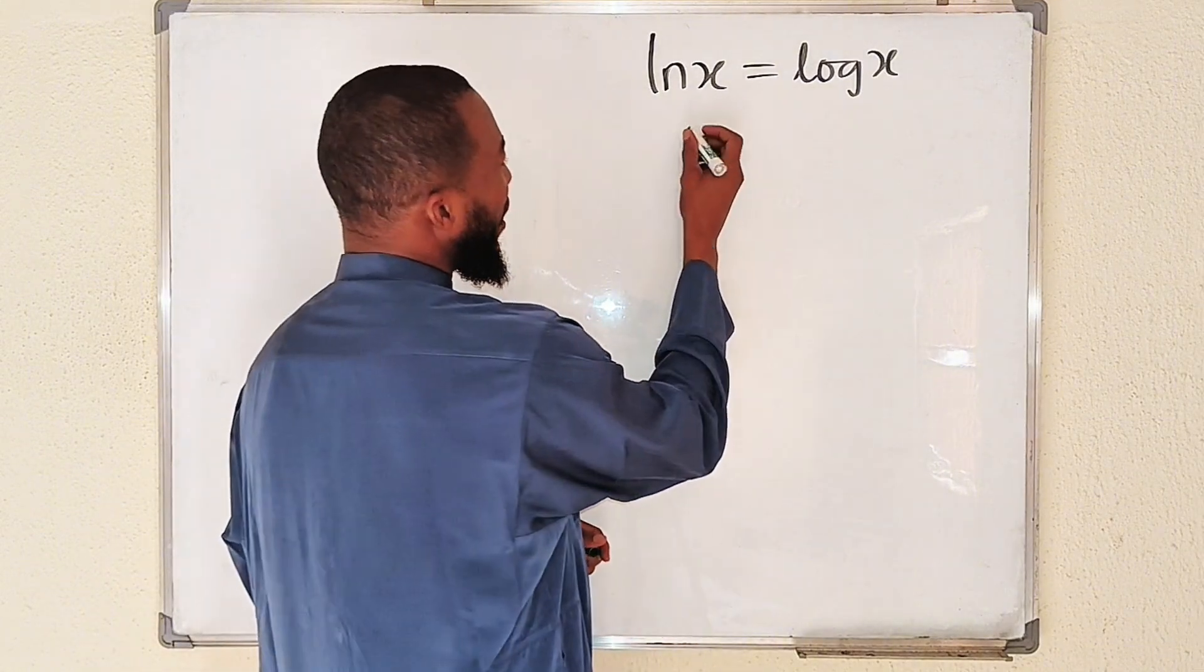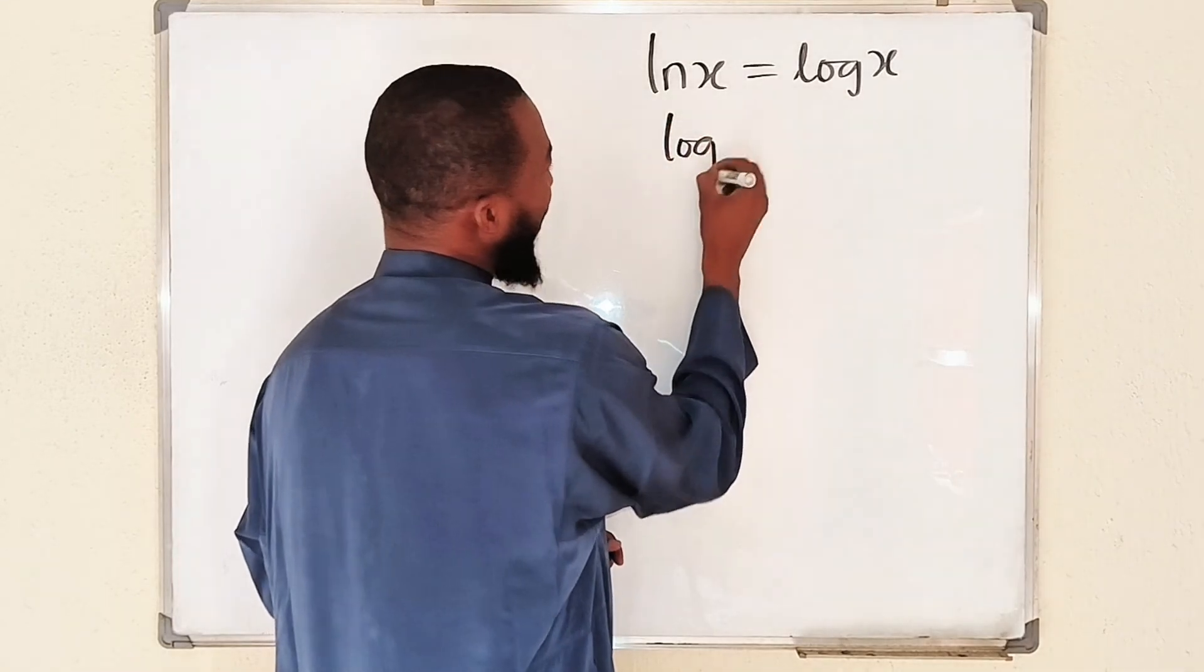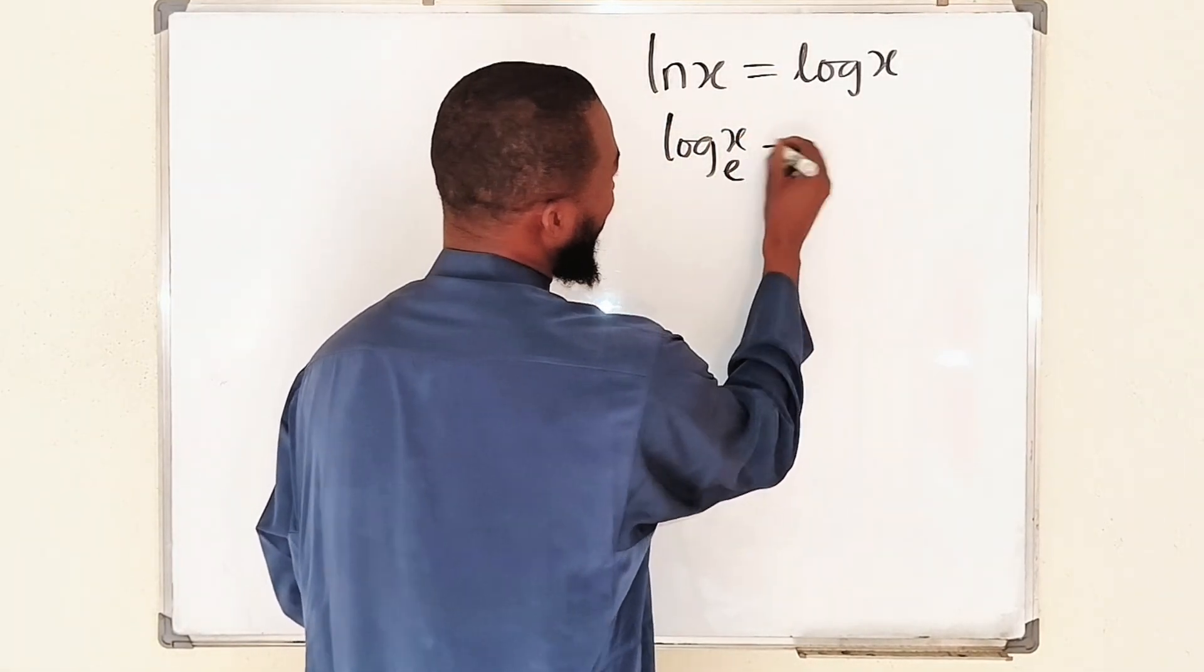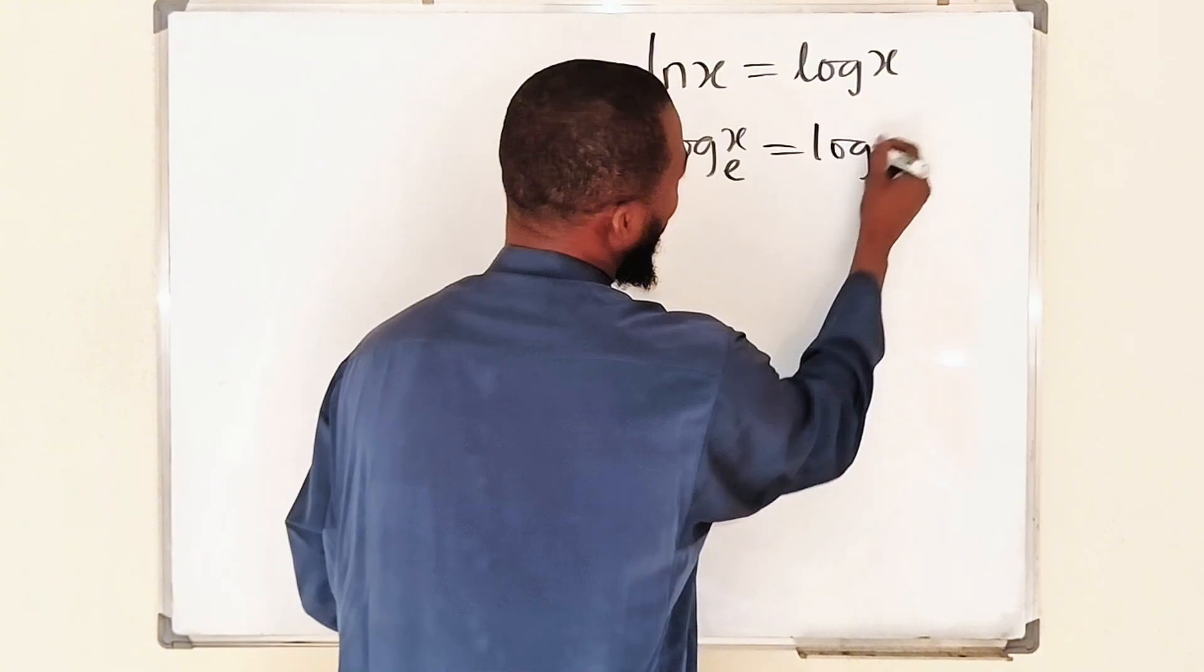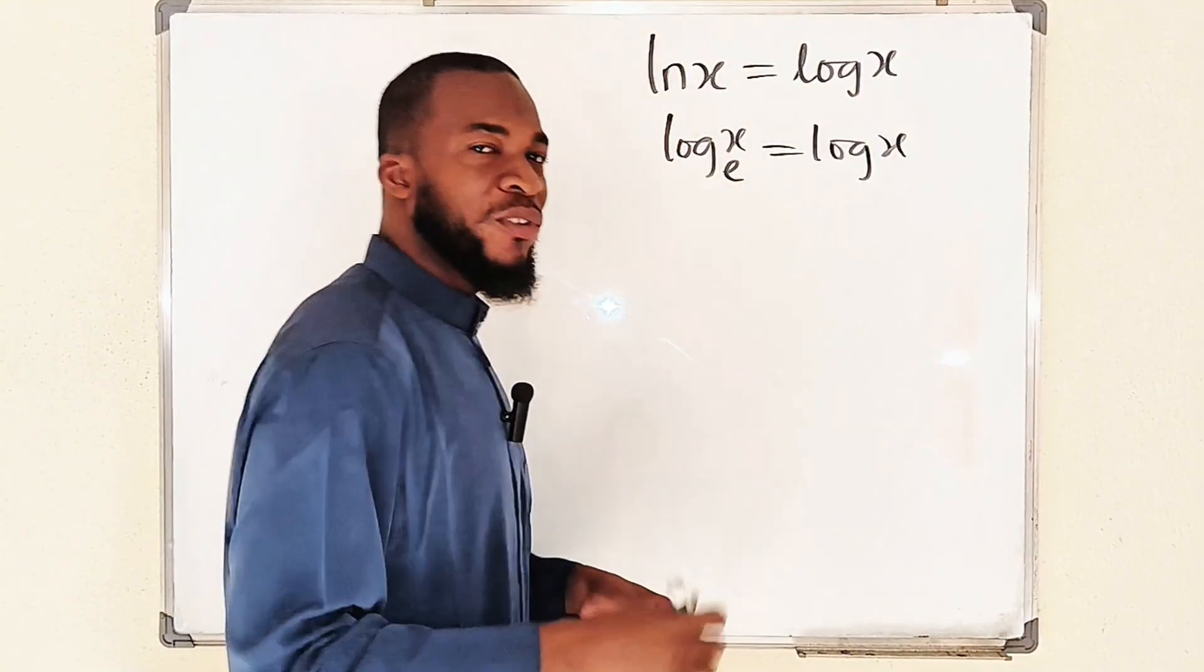So this can be written as log of x with the base of e. This is equal to log of x with the base of 10, which I don't have to write.